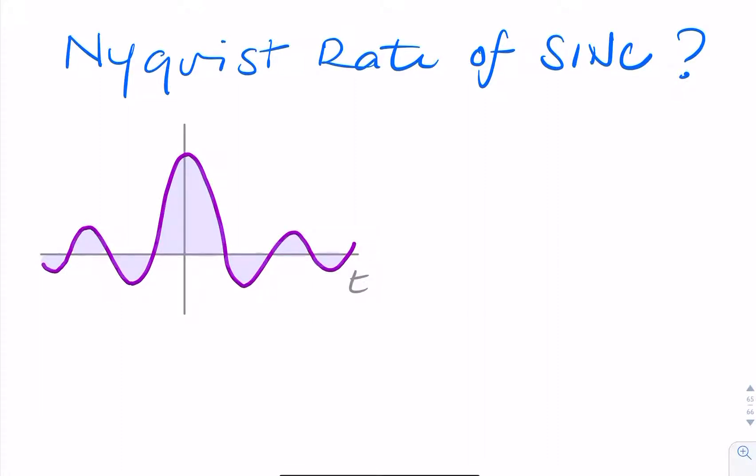How would we find the Nyquist rate for a SYNC function? So say we had a SYNC function in the time domain, how would we find the Nyquist rate? If we were to sample a SYNC function, how close do these samples need to be?